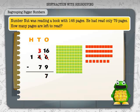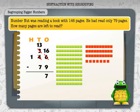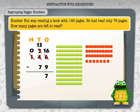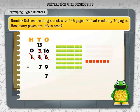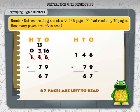Next we subtract in the tens place. From three tens we need to take away seven tens, but we have only three. Let's borrow from the hundreds to get ten tens. We now have thirteen tens and no hundreds. Subtracting seven tens from thirteen tens leaves six tens. Write six in the tens place. 146 minus 79 is equal to 67.